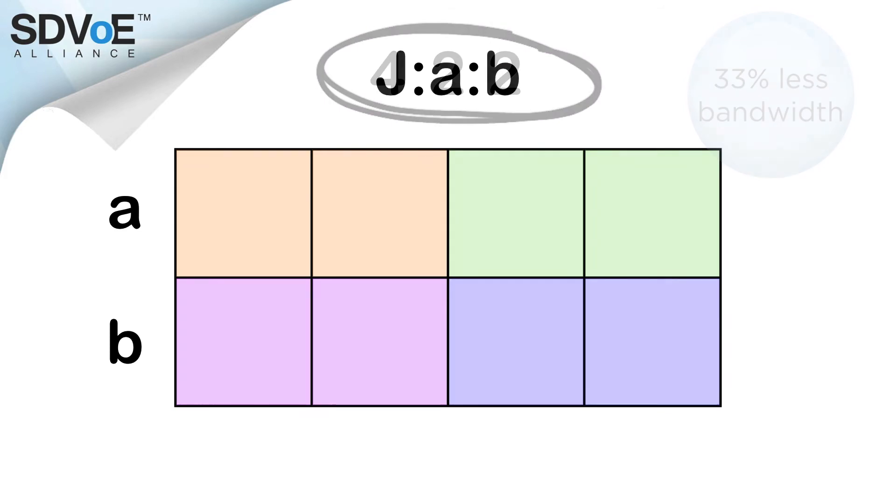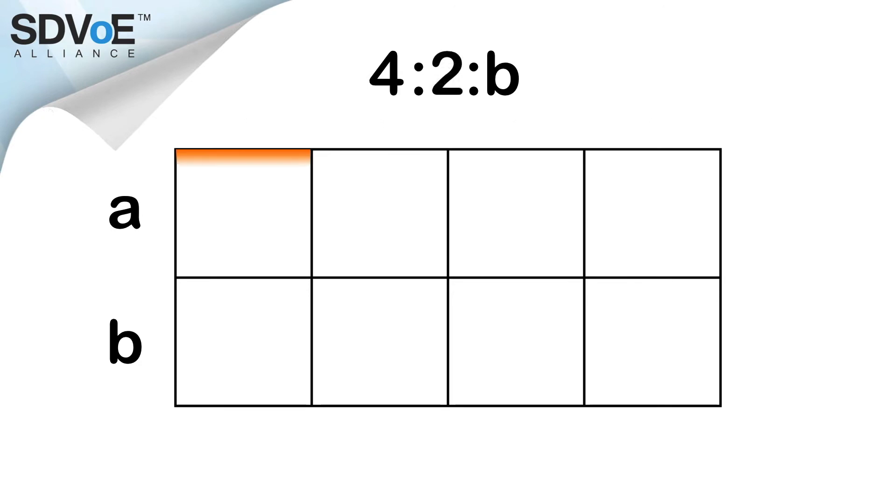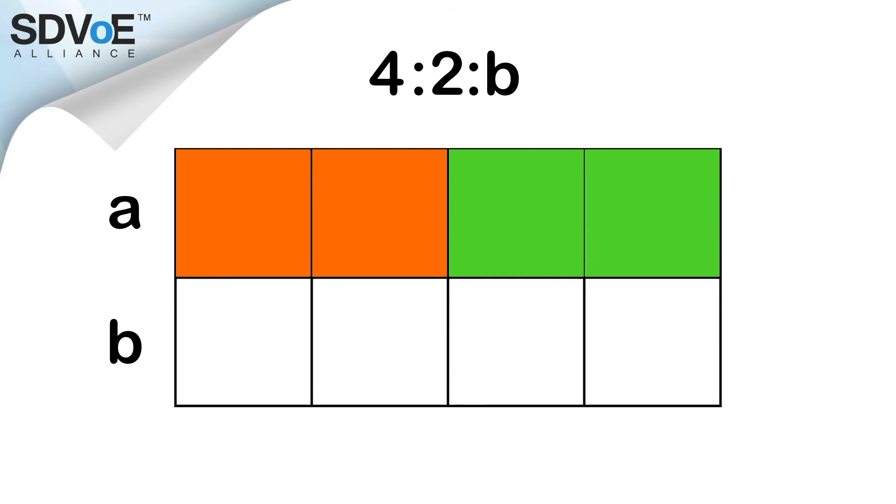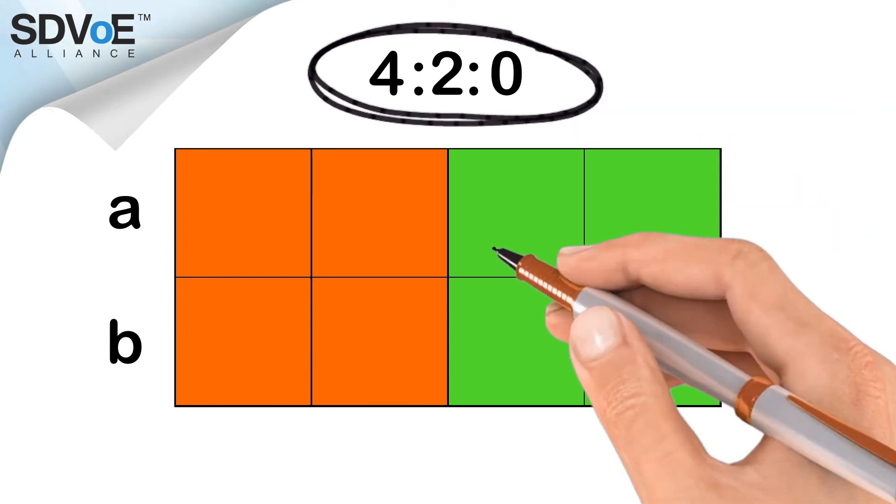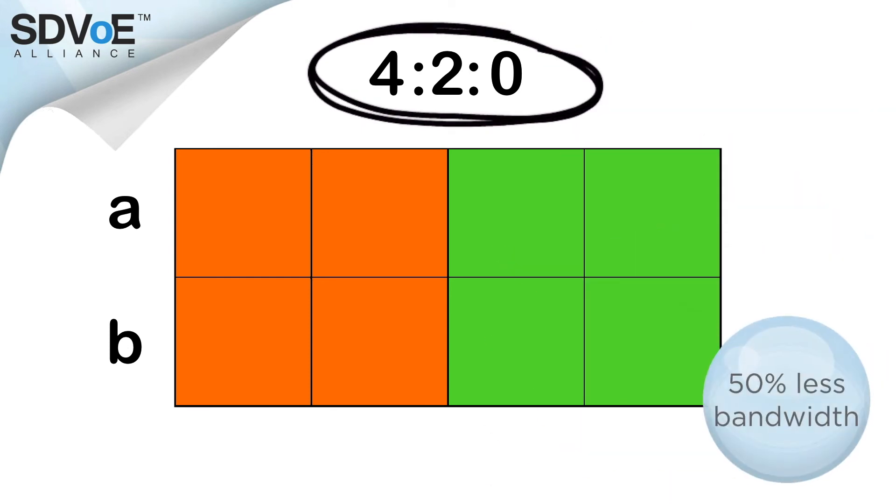Now let's take this a step further. Again, we'll use the same grid so our J value is 4 columns, and again, we'll make every second pixel on row A share the same color data as the pixel before it. This time however, we're also going to make the pixels in row B share the same color data with those above. This gives us a B value of 0, because effectively no pixels in this row have their own color data. Now we have a chroma subsampling ratio of 4:2:0, resulting in the bandwidth being reduced by around a half compared to our original 4:4:4 image.